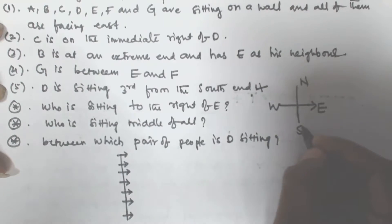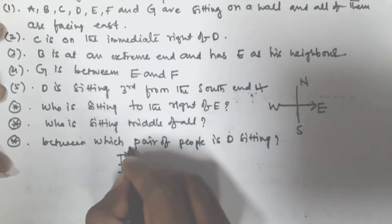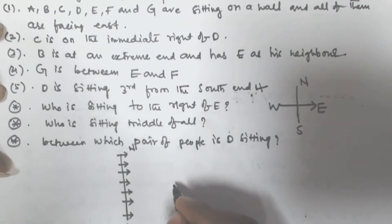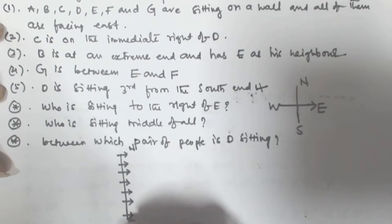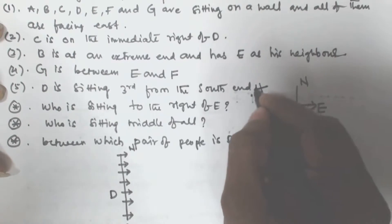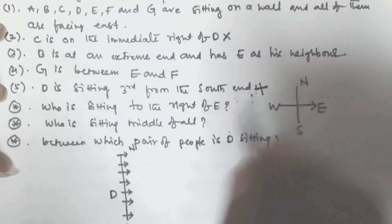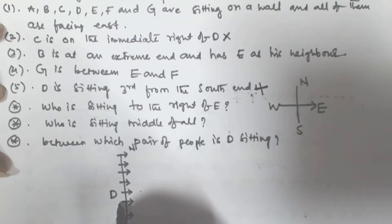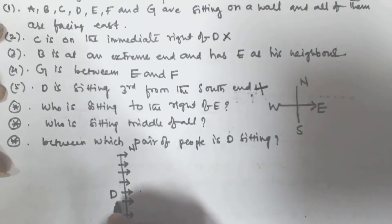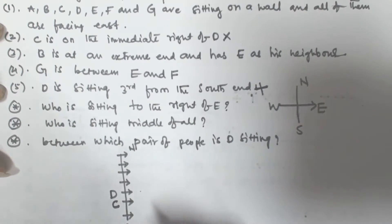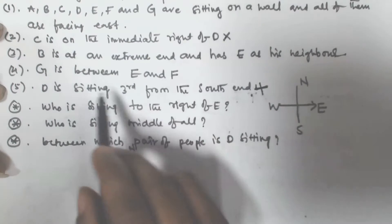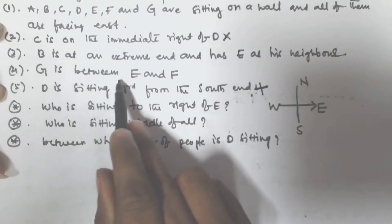From the south — this is south and this is north, and they are all facing east — D is sitting third from the south end: first, second, third. So this position is D. And C is on the immediate right of D: since D is facing this direction, his right is this position, so C is here.